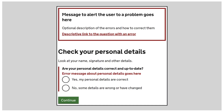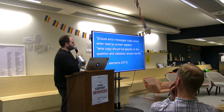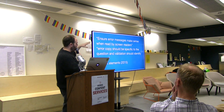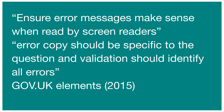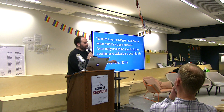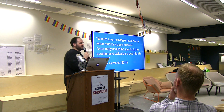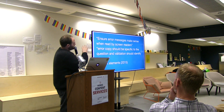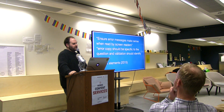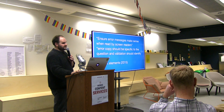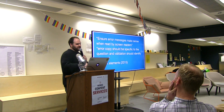This has changed a couple of times, but in 2014 the only content guidance was: 'ensure error messages make sense when read by screen readers,' and 'error copy should be specific to the question and validation should identify all errors.' This was replaced in 2016 with 'writing a message that helps the user to understand why the error occurred and what to do about it' — but it still meant you got loads of really random errors.